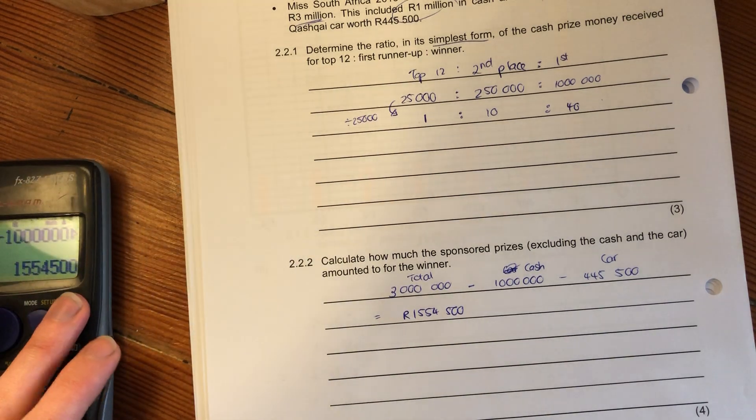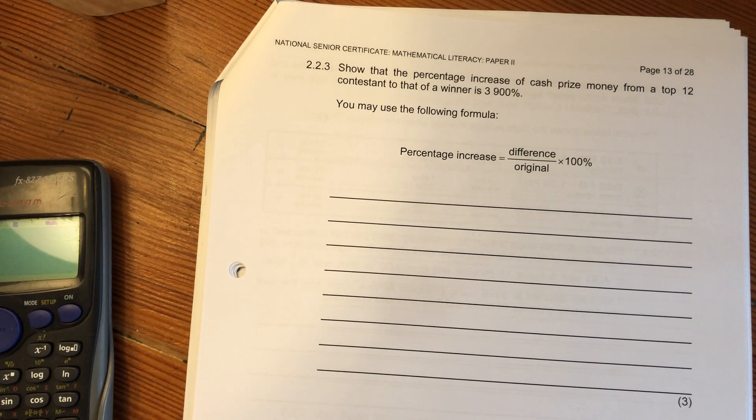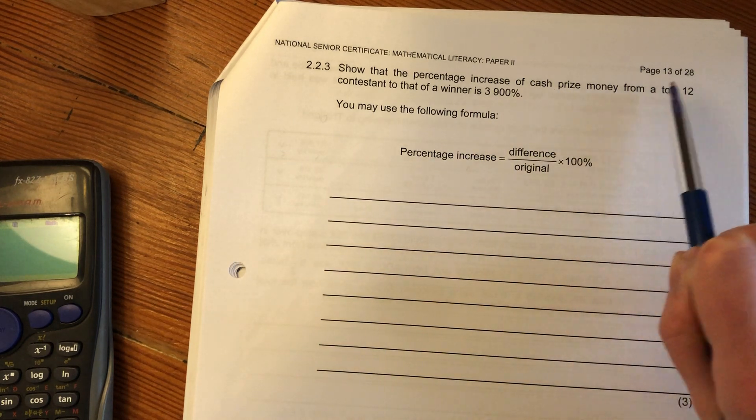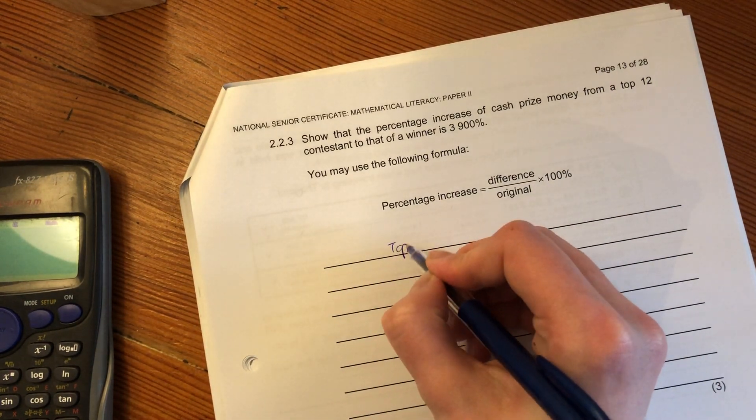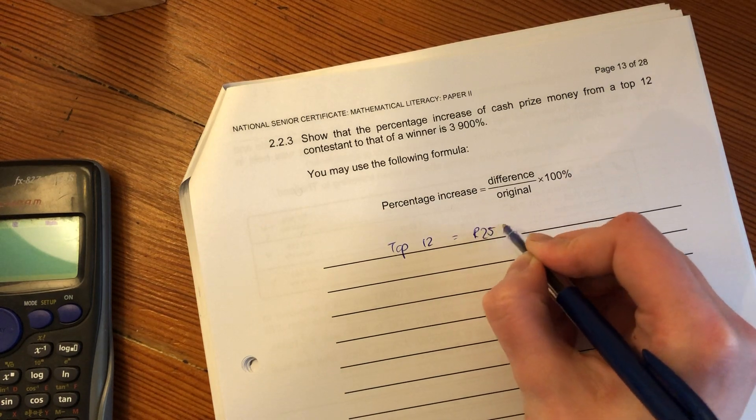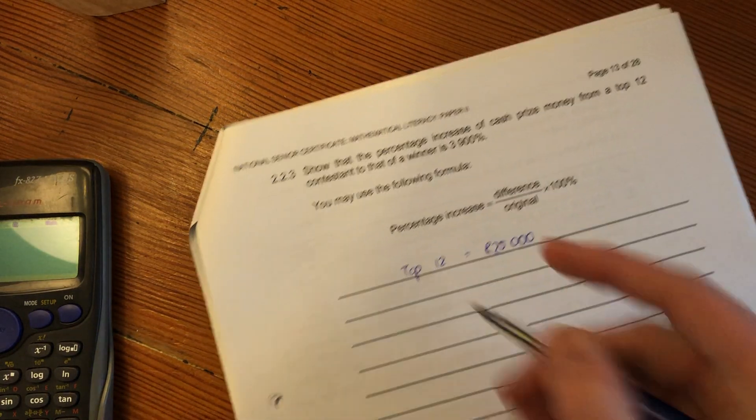The last question says show that the percentage increase of cash prize money from a top 12 contestant to that of a winner is 3,900%. The percentage increase formula is: difference over original times 100%. The top 12 was R25,000 and the winner was 1 million cash.